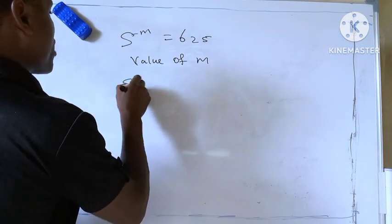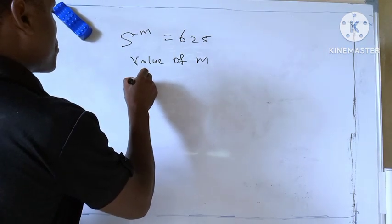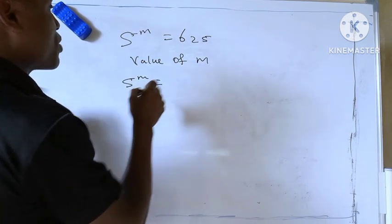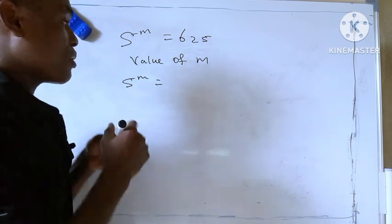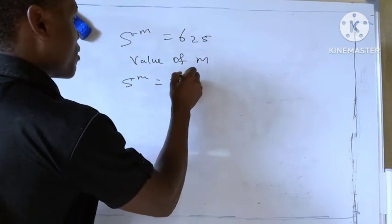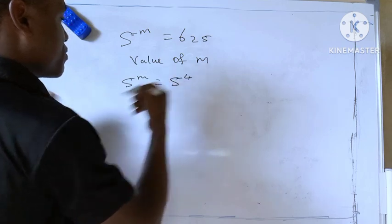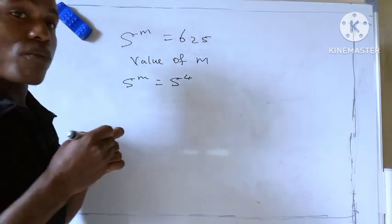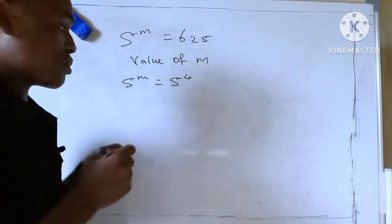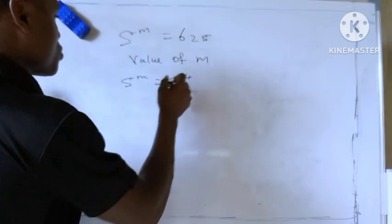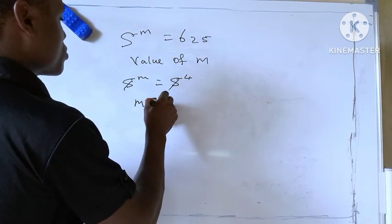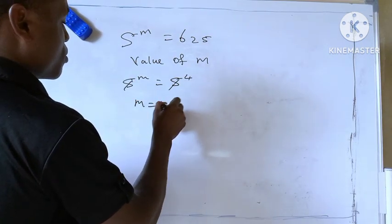Solution. We have 5 raised to the power m equal to — we can change 625 to 5 raised to the power 4, because 5 times 5 times 5 times 5 will give you 625. So 5 cancels, giving us m equal to 4.